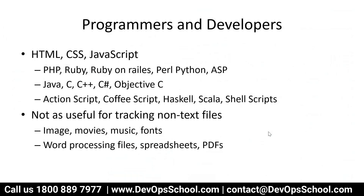Anyone who wants to version their source code can use Git. Git is suitable for files you can open in Notepad — simple readable code files. However, binary files like Word documents, spreadsheets, PDFs, images, movies, music files, and font files are not ideal for Git. You can store them, but you can't meaningfully compare versions, so they don't benefit much from versioning.